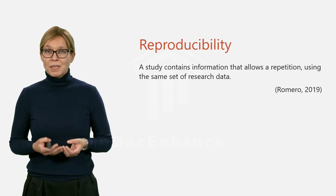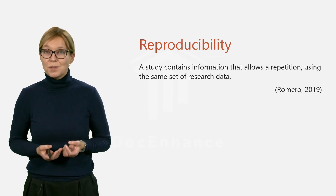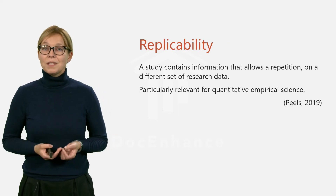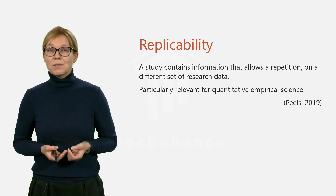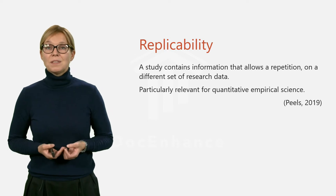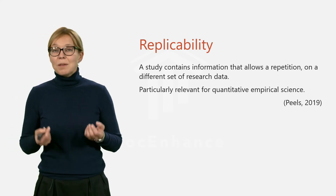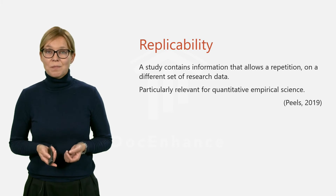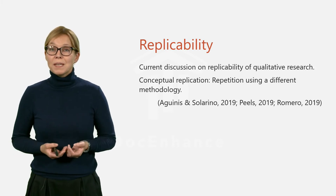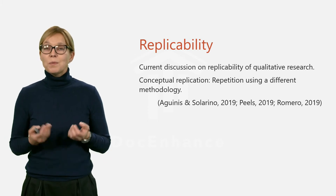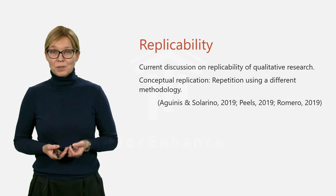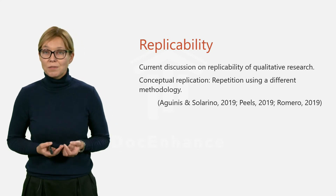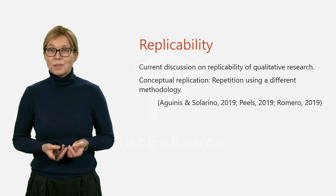Reproducibility of research means that a study contains enough information to allow a repetition of it, but now on a different set of research data. Replicability is particularly relevant for quantitative empirical science, such as the medical sciences and the life sciences. But there are more and more people now who discuss how we can replicate qualitative research that we typically find in the humanities and in the social sciences. For example, people are currently discussing the strength of so-called conceptual replication, where a study is replicated using different methods.